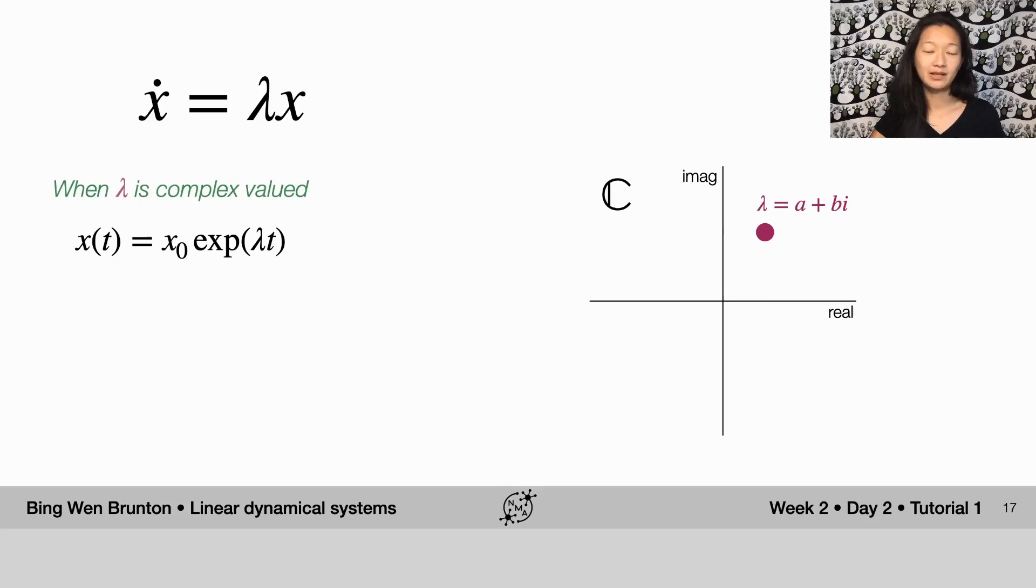When lambda has a non-zero imaginary component, it's no longer on the horizontal axis. It lives somewhere in this higher dimensional space and we can express this number as a plus bi for its real and imaginary components respectively.